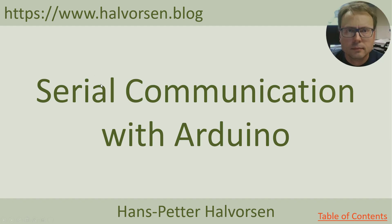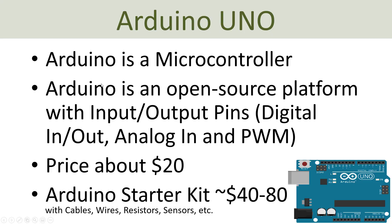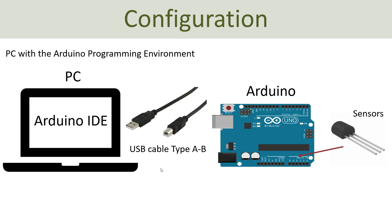Let's start with some basic serial communication with Arduino. First, a short introduction to Arduino for those who haven't used it before. Arduino is a microcontroller and an open source platform with input and output pins. Here you see an Arduino Uno, with pins on top and bottom that you can use to interface different types of sensors. It's a quite cheap device, about $20. Here you see how you configure the Arduino — you can have different sensors connected to the pins, and then you connect to your computer.